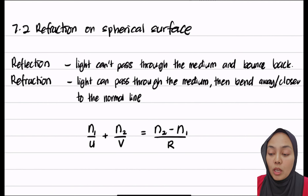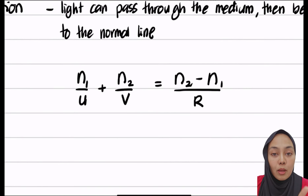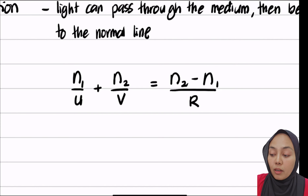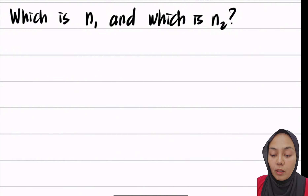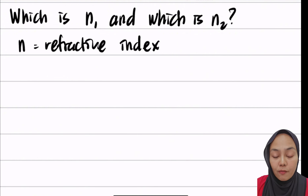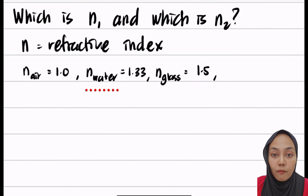For this equation to be used, you have to determine first: which one is n1 and which one is n2, and number two, you also have to determine whether the sign of r is positive or negative. Now, n is the refractive index. For example, air is 1.0, water is 1.33, glass is 1.5, and oil is 1.47.